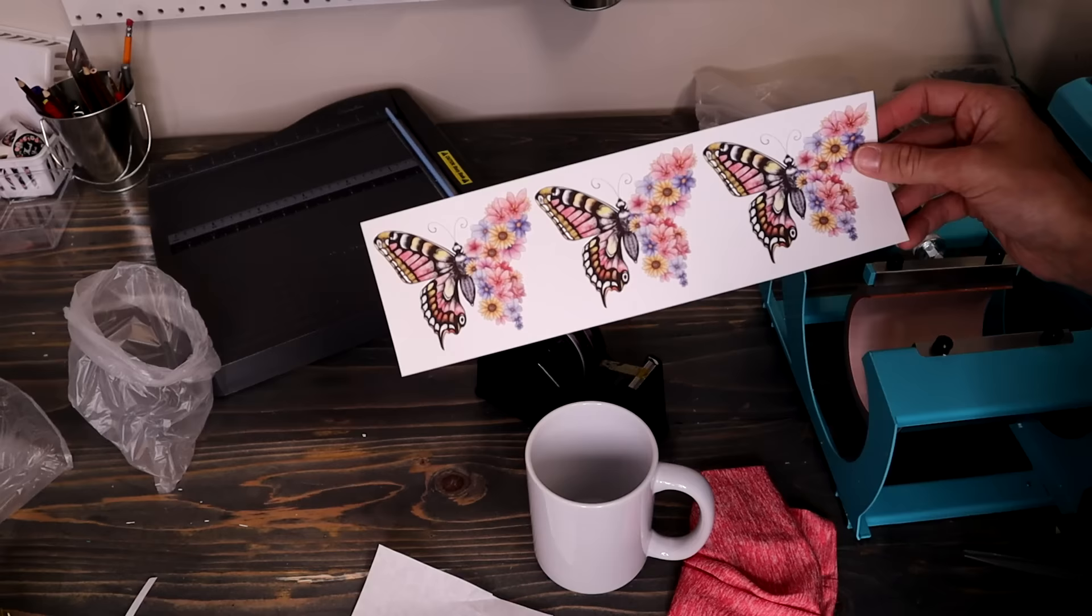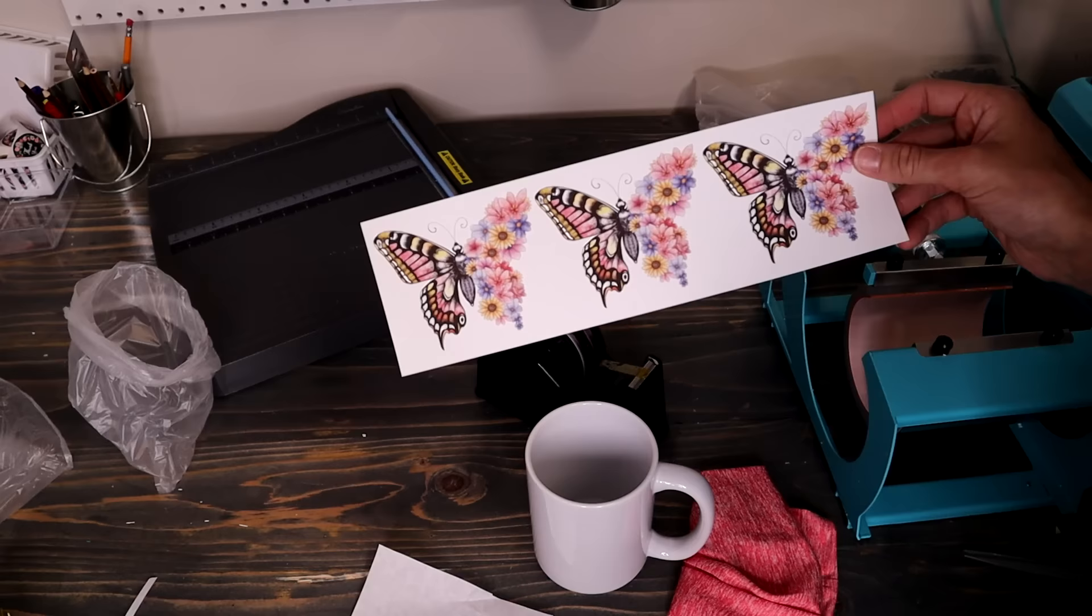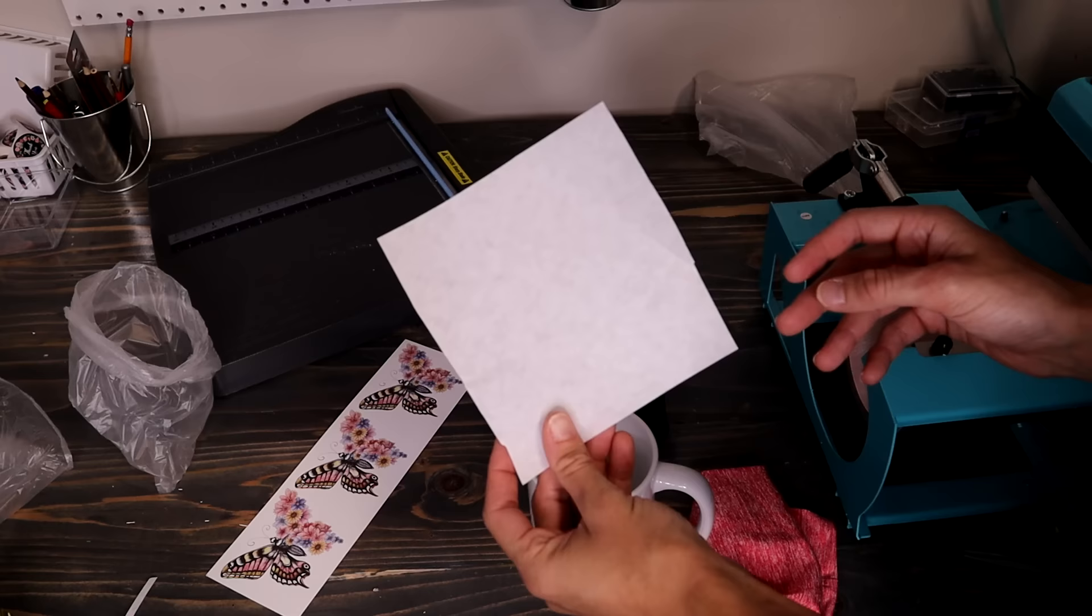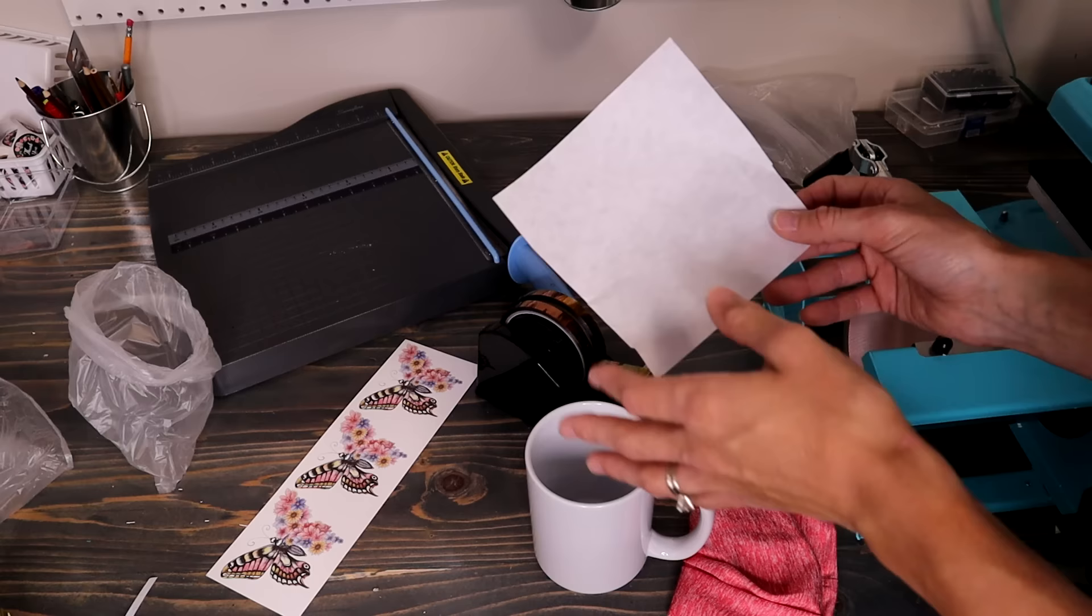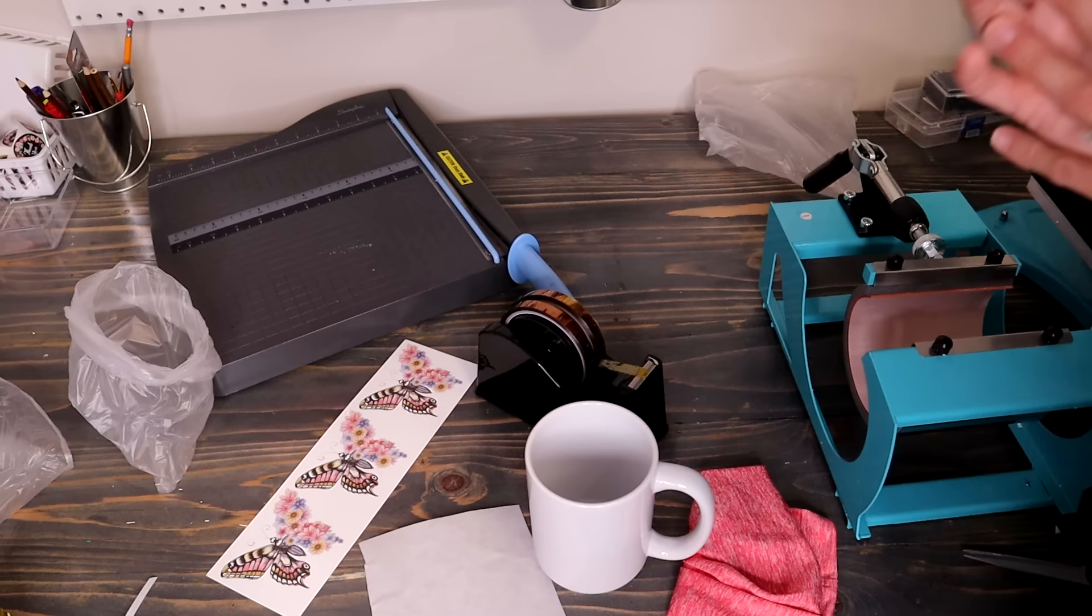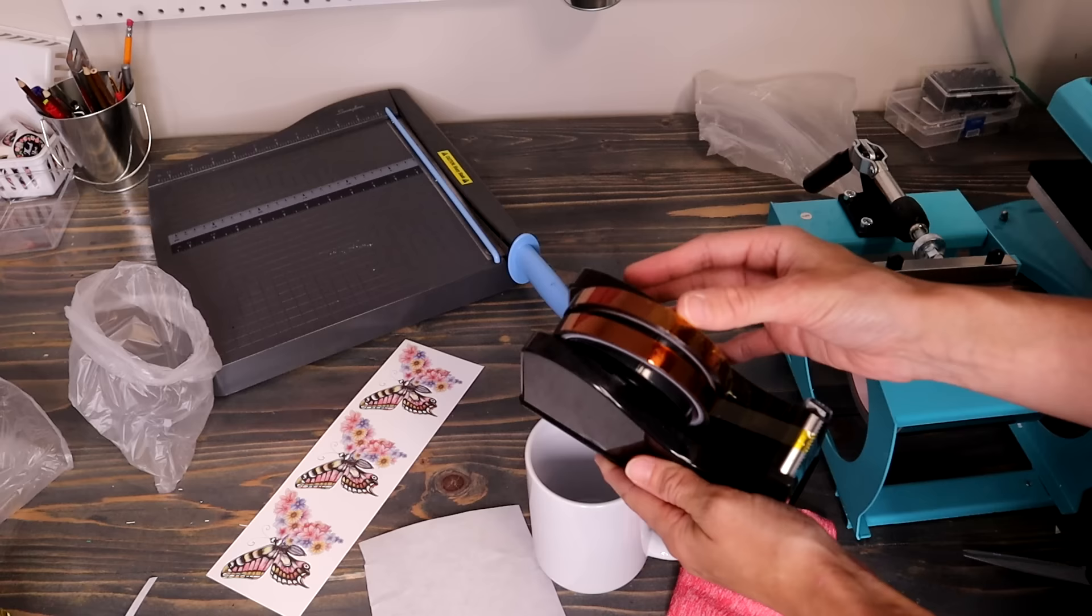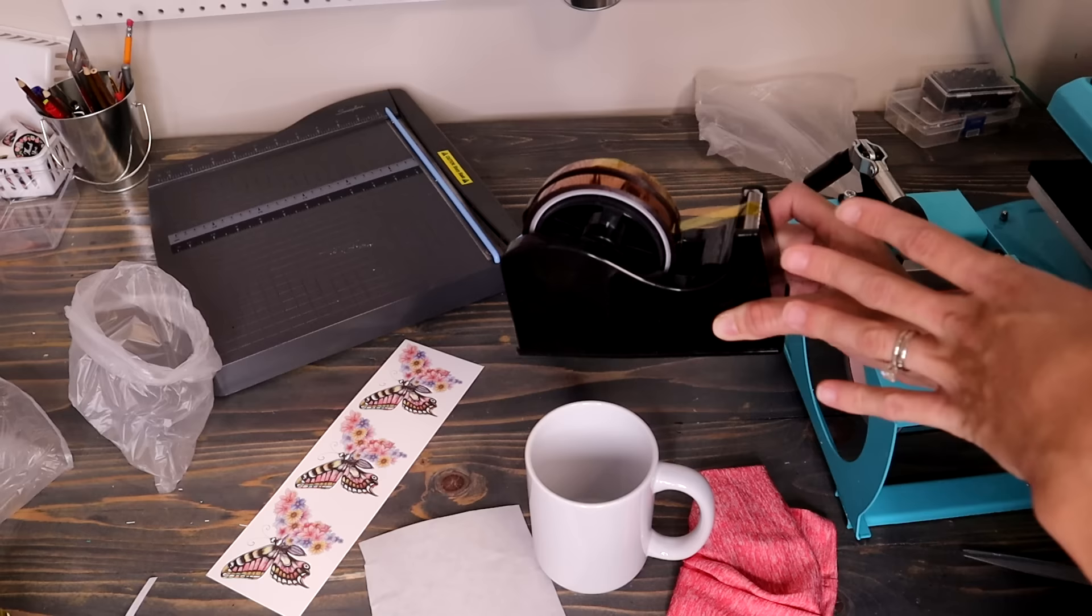You're going to need your design. I'm going to be using this butterfly on one, and make sure it is mirrored. You're going to need butcher paper because sublimation, the ink will release to whatever surface is touching your cup, so you need this paper over your design to keep it safe and to keep your press from getting ink all over it. You're going to need heat tape. This is important. You can't use any other tape other than heat tape when it's going into a hot surface. I'll link this down below, the exact one I have, but it is from Amazon.